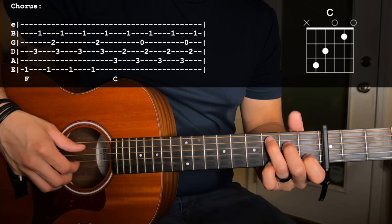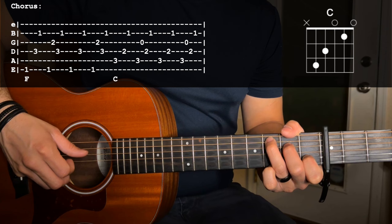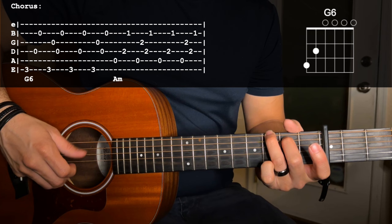Then we're going to switch to C, do the same picking pattern. Switch to G6. And then go to A minor.